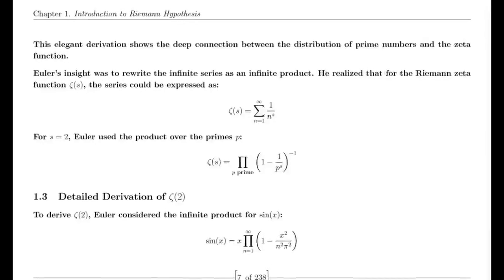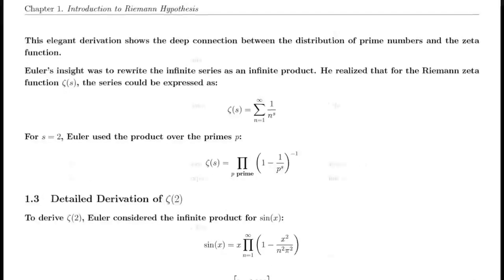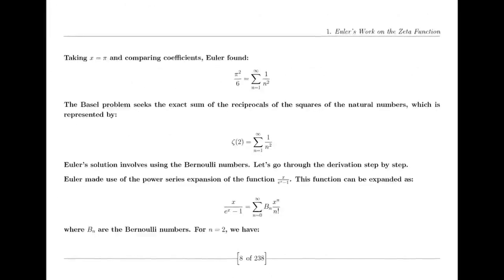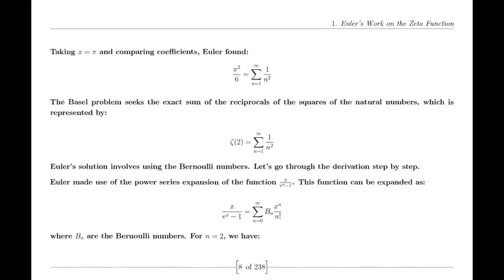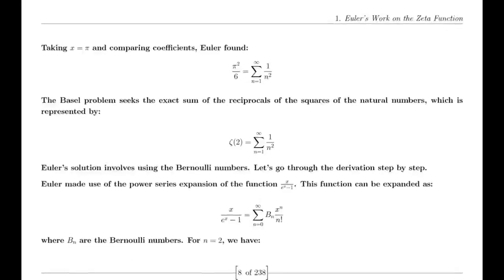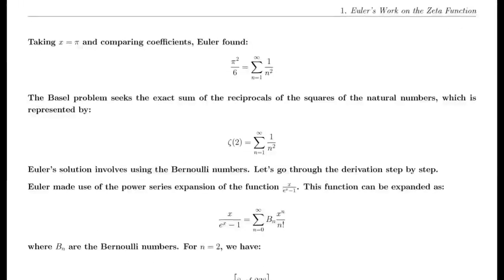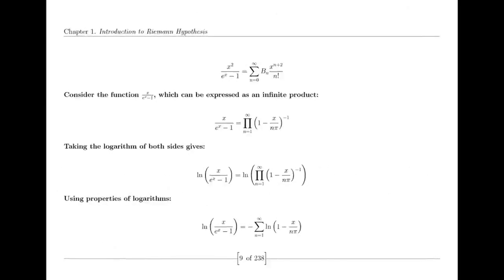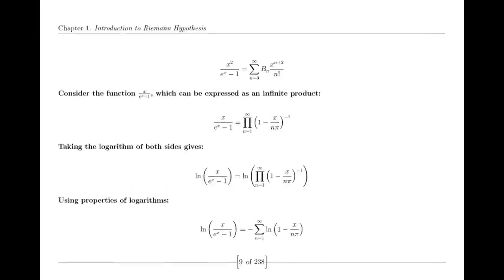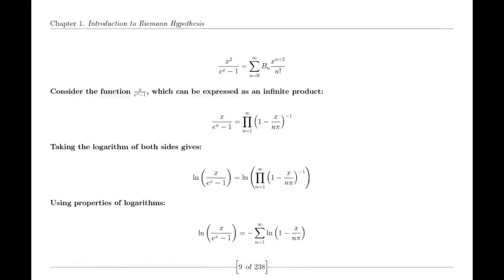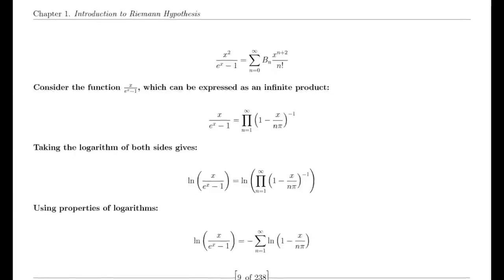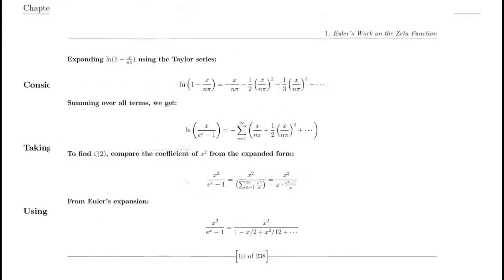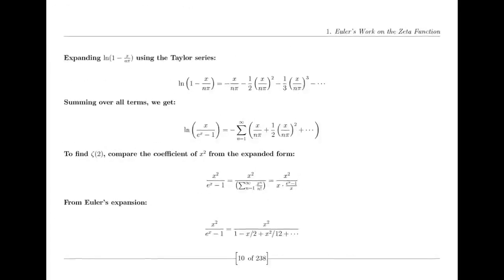The functional equation of the zeta function relates its values at s and 1−s through a complex expression involving π, the gamma function, and trigonometric functions. This equation is a key result in the theory of the zeta function, showcasing its symmetry and the deep relationships between different mathematical concepts.